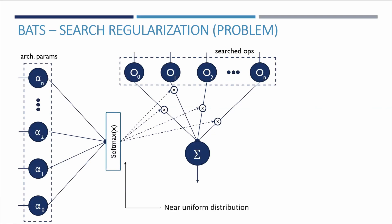The output of a node is obtained by taking a weighted sum of all incoming edges. In order to maximize information flow, the architecture parameters tend to converge to the same value, making the selection of the final architecture problematic and susceptible to noise. This results in topologies that may perform worse than a random search.